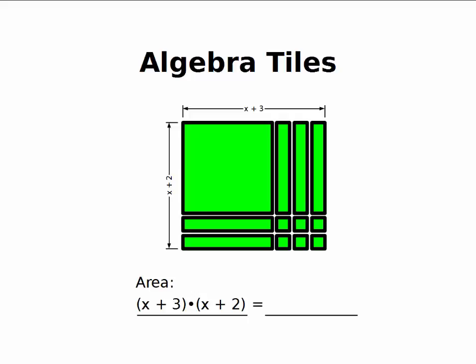But let's look at the areas of the pieces. I've got 1 x squared. I've got 1, 2, 3, 4, 5 x's, and 1, 2, 3, 4, 5, 6 ones. So I could also write this as x squared plus 5x plus 6. Both of these are equivalent, because the area doesn't change just because I change how I look at it.